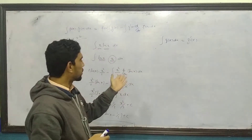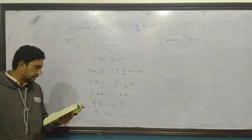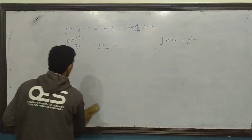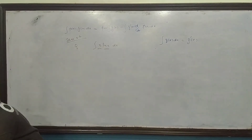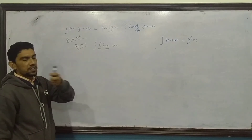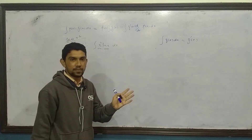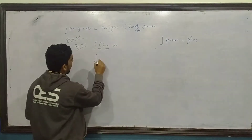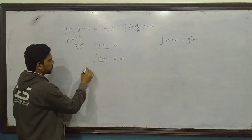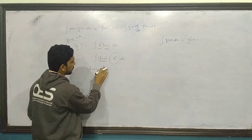Yeh bhi simple tha - ismein log of x ke saath x tha. Jab bhi akela log function aaye ya koi bhi trigonometric inverse function akela ho, toh uska second function aap 'one' rakh lein. Ab question number one ka third part hai: x squared log of x. Phir se pehli preference dekhte hain - log function hai, toh log of x pehla first function hoga, aur second function hai x squared.